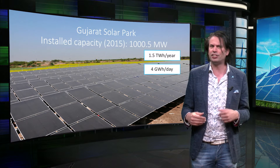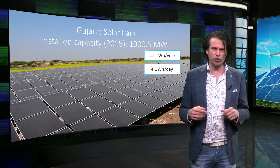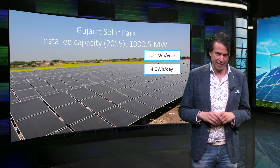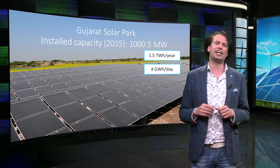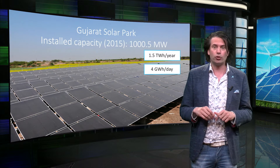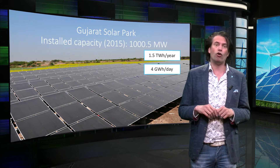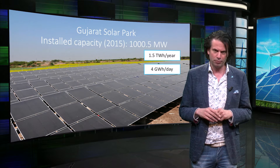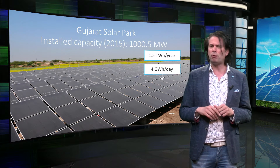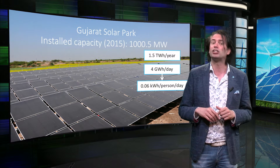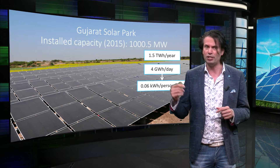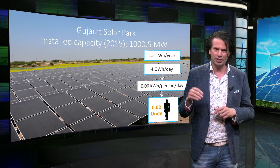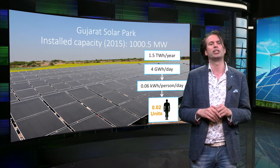This means there is an average production of 4 GWh per day, which divided by the entire population of Gujarat of 62.7 million people comes to 0.06 kWh per person per day, or 0.02 human energy units as introduced last week.